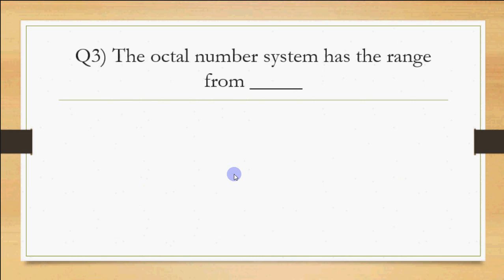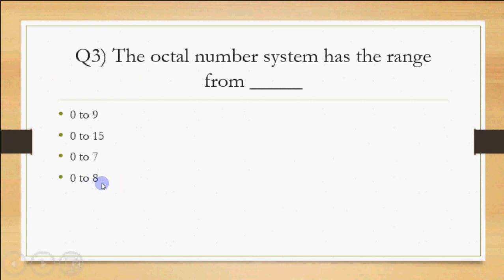Question 3: the octal number system has a range from what? Octal means 8 digits possible, from 0 to 7. Options given are 0–9, 0–15, 0–7, and 0–8. The answer is not 0–8; octal is 0–7, with 8 distinct digits, and 7 is the highest. So the answer is option 3: 0 to 7. If you are not clear on octal or hexadecimal, refer to the number systems videos already uploaded.